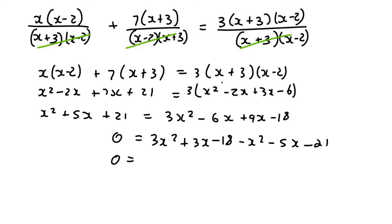Then I'm going to put the x squares together, so that's going to give us 2x squared. Then I'm going to put the x together, which will be minus 2x, and then minus 39.